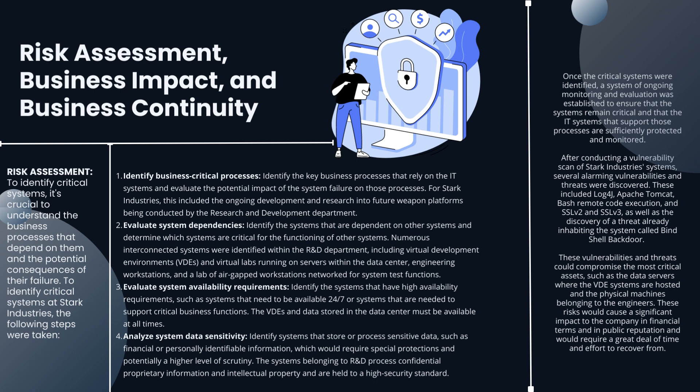Risk assessment, business impact, and business continuity — this will continue for the next three slides. Risk assessment to identify critical systems: it is crucial to understand the business processes that depend on them and the potential consequences of their failure. Shifting gears to Stark Industries, there are four steps used to identify critical systems. Step one: identify business-critical processes — identify the key business processes that rely on IT systems and evaluate the potential impact of system failure. For Stark, this included ongoing R&D development research into future weapon platforms. Step two: evaluate system dependencies — identify systems that are dependent on other systems and determine which are critical for the functioning of others.